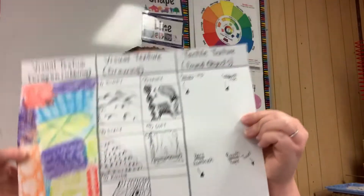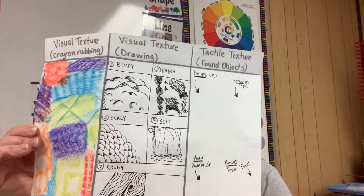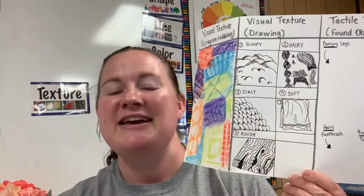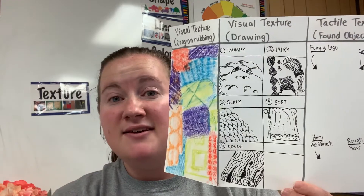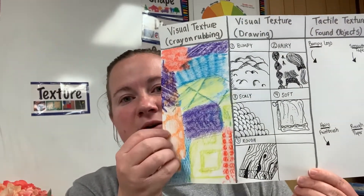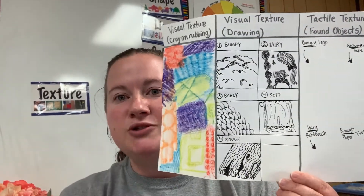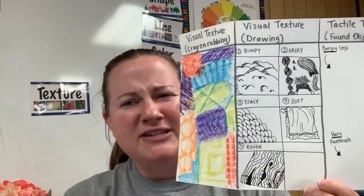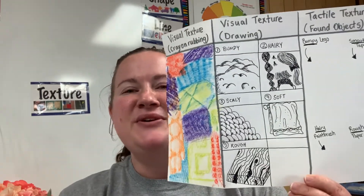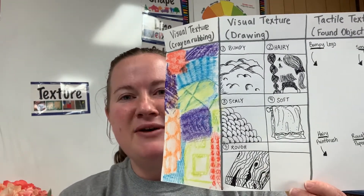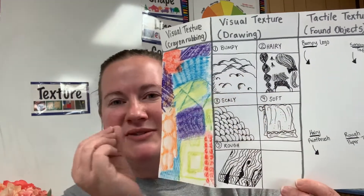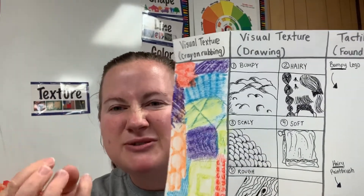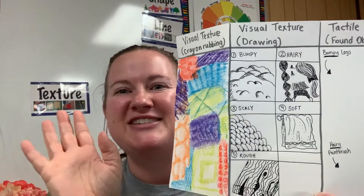You're going to stretch your paper out and you also will see visual textures. This is through drawing. An artist not only does texture rubbings, but they can also draw to create textures. It's almost like they're playing a magic trick on you — when you have somebody draw something using lines and shapes to where it starts to look like it feels a certain way, if only we could just touch it.